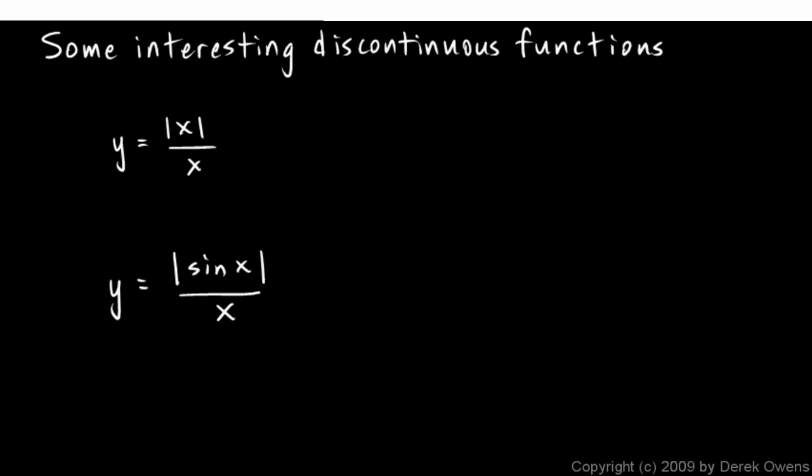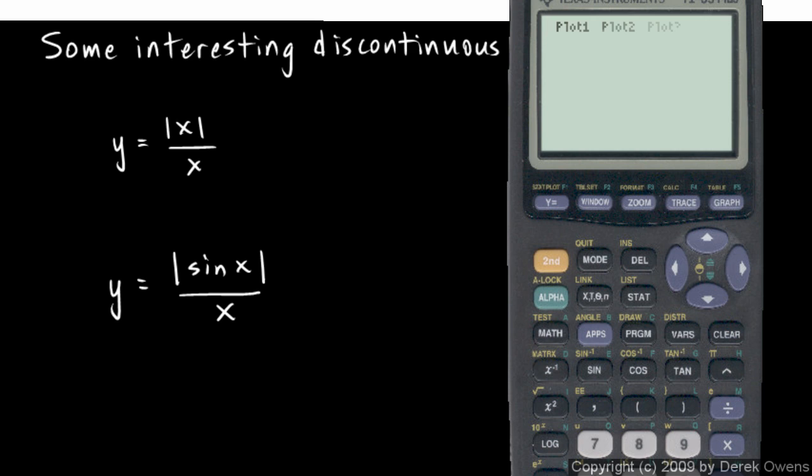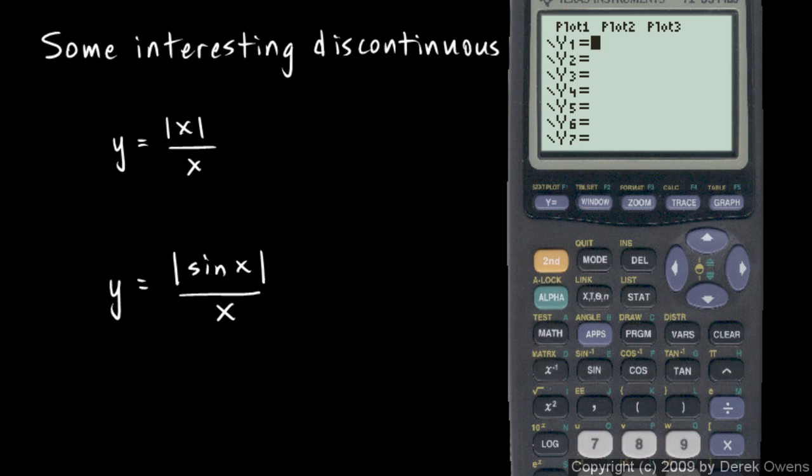The first one is y equals the absolute value of x over x. Let's pull up the calculator and put this in. On the TI-83, the absolute value is on the math menu, and you go over to num, and it's option 1 there.